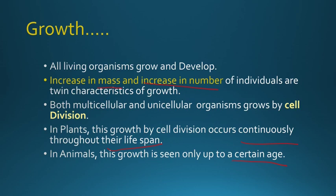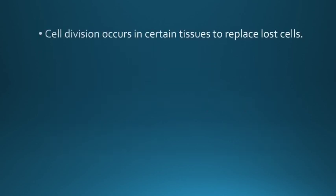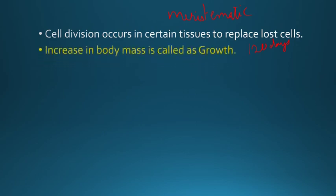Do all cells grow? No. There are certain permanent cells and some cells which continue to grow. Cell division occurs in certain tissues to replace lost ones. In plants, the meristematic tissues continuously grow — they are present in the apical region and the axillary buds. In human beings, the lifespan of RBCs is 120 days, so once they die, new cells are formed. Platelets have a lifespan of 3 to 4 days, and WBCs about a week. Dead cells are replaced by new ones. Increase in body mass is called growth.